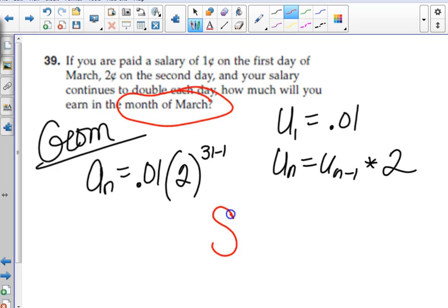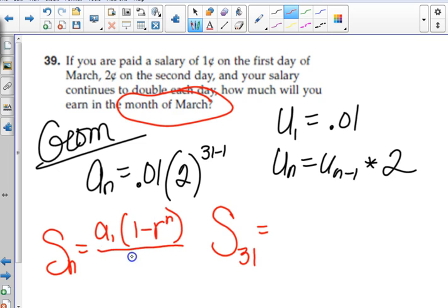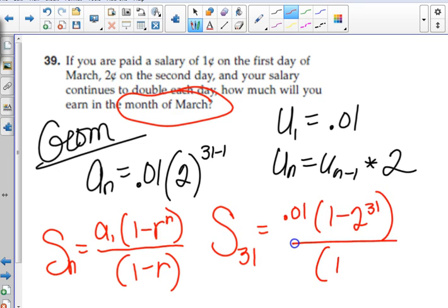So, we need the sum of the 31 days. Anybody remember the sum for the geometric sequence? We just did this one yesterday. Okay. We just did this one yesterday. A1, 1 minus R to the N, which you might want some extra parentheses, over 1 minus R. So, 0.01 times 1 minus 2 to the 31st. Don't need to do N minus 1. Okay. That'll give you the sum.